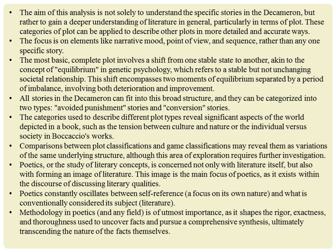We can start thinking about creating a classification system of plots. It is hard to come up with solid hypotheses, so Todorov summarizes what he has found from studying the Decameron. The most basic, complete plot can be seen as a shift from one stable state to another. Here Todorov borrows the term equilibrium from genetic psychology — it refers to a stable but not unchanging relationship within a society, like a set of rules or a social system. There are two moments of equilibrium, which are both similar and different, separated by a period of imbalance. This imbalance includes both a process of deterioration and a process of improvement. All the stories in the Decameron can fit into this broader structure.